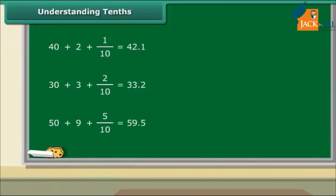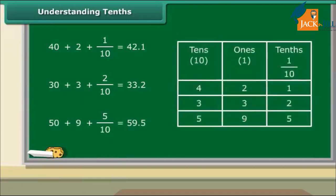Let us read these numbers from the table. 4 tens and 2 ones and 1 tenth make 42.1. 3 tens and 3 ones and 2 tenths make 33.2. Similarly, 5 tens and 9 ones and 5 tenths make 59.5.